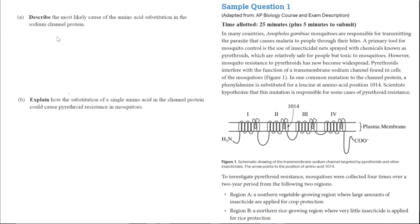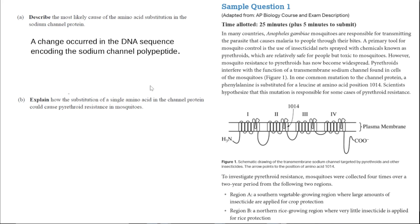For this first part, the question is asking us to describe the most likely cause of the amino acid substitution in the sodium channel protein. What they're referring to is that in this one common mutation, a phenylalanine is substituted for a leucine at amino acid position 1014. We have to think back and recall how proteins are formed and understand that any changes in the amino acid sequence is most likely caused when the RNA was transcribed from the DNA. So it's most likely going to be a change in the DNA sequence that encodes for that sodium channel polypeptide.